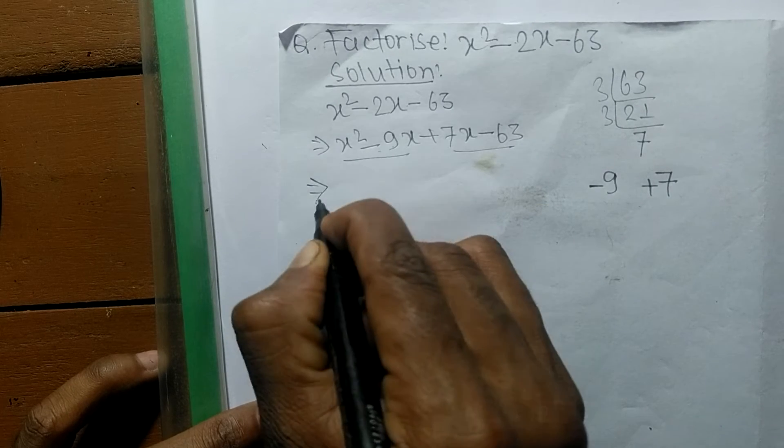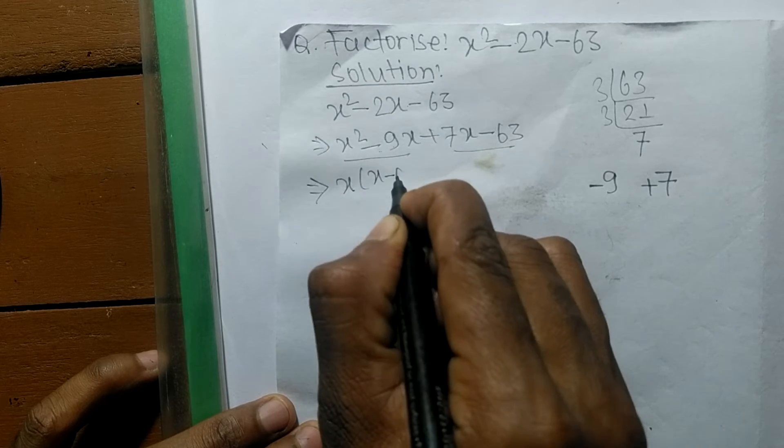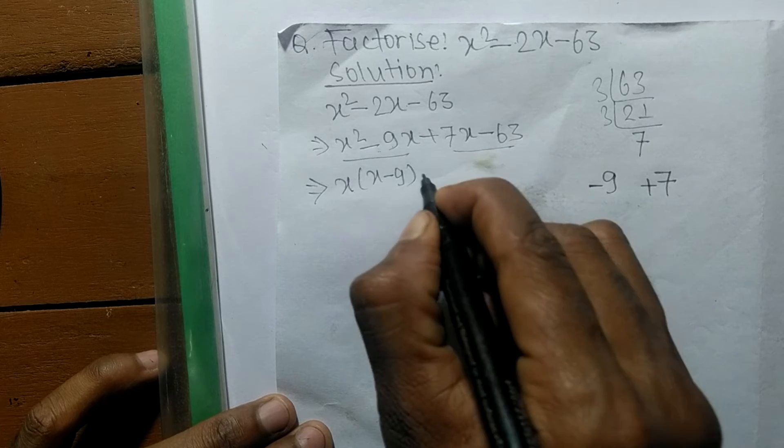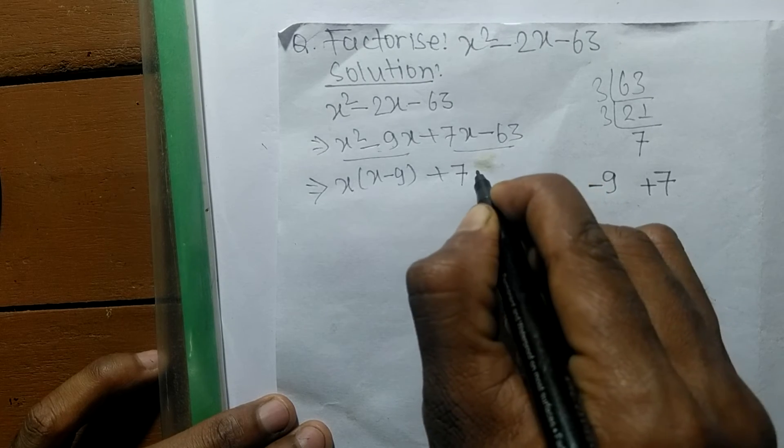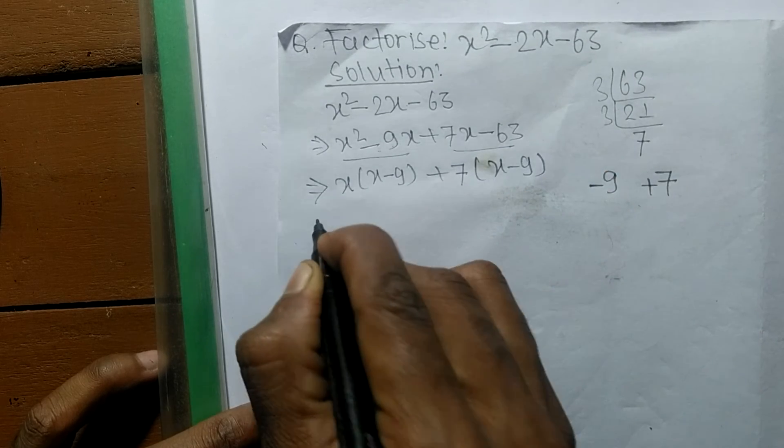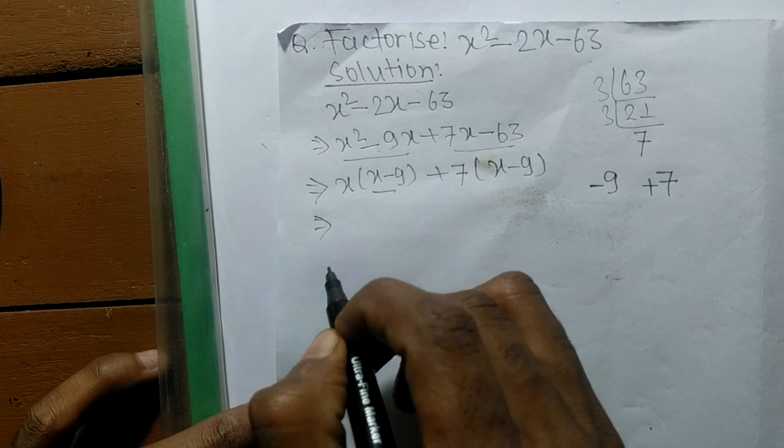In the first pair, the common here is x and the remaining is x minus 9. Like as in second pair, the common here is plus 7, so the remaining is x minus 9.